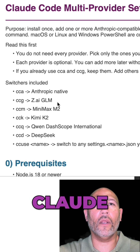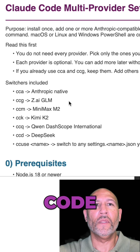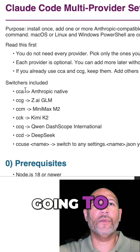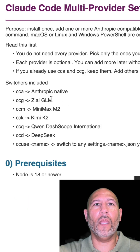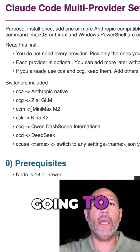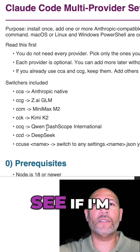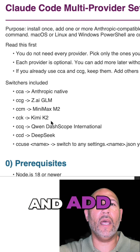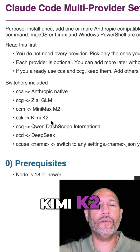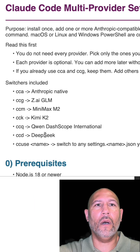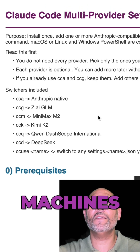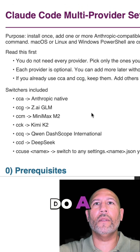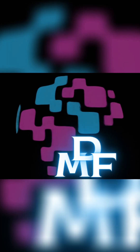On this machine I only have Zed AI installed in my Cloud Code, but I'm going to add Anthropic and MiniMax M2. I might also go ahead and add Kimi K2 and DeepSeek. I work between multiple machines, so we can do a fresh install for this video.